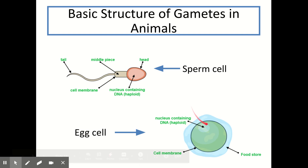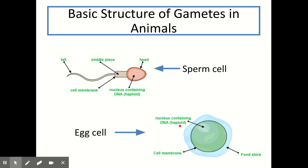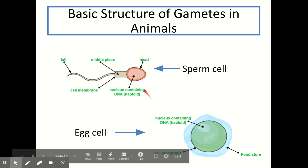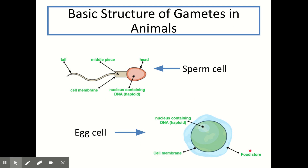The female gamete is the egg cell. It also contains a haploid nucleus with a single set of chromosomes, so that when the two join together they create a diploid cell. The egg cell also contains a food store to help provide nutrients as the cells begin to divide before the placenta and umbilical cord are formed.